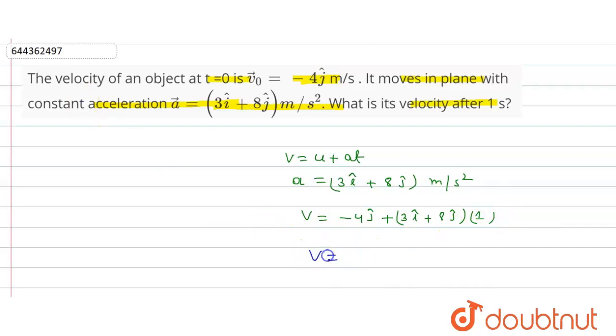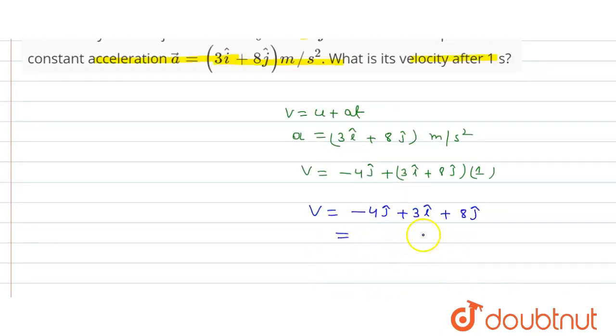So velocity v equals minus 4j cap plus 3i cap plus 8j cap. That is equal to minus 4j cap plus 8j cap, which equals 4j cap plus 3i cap.